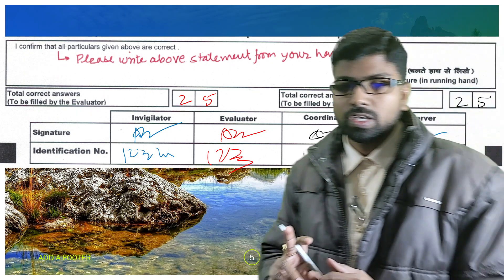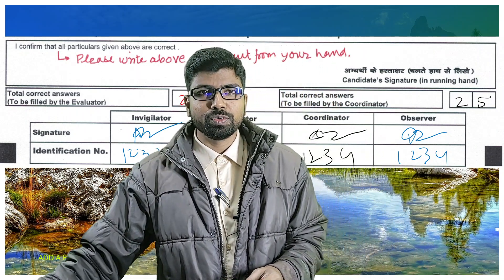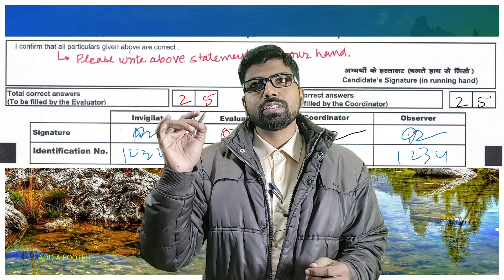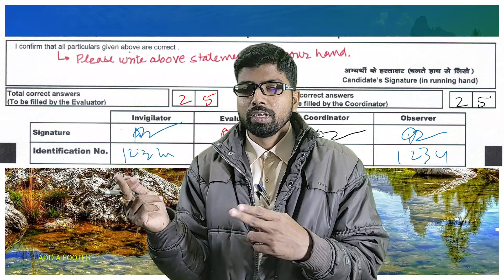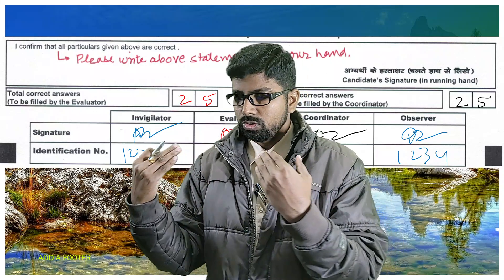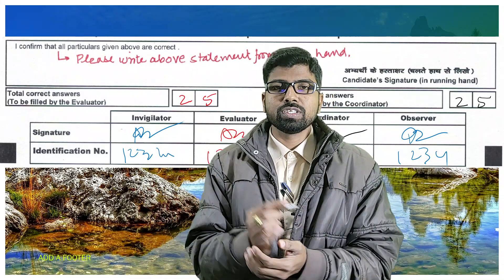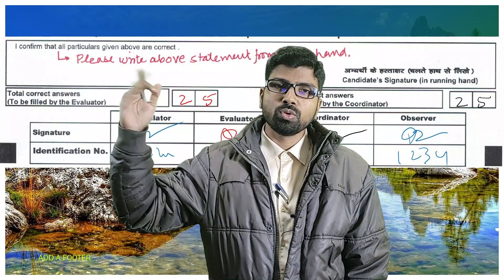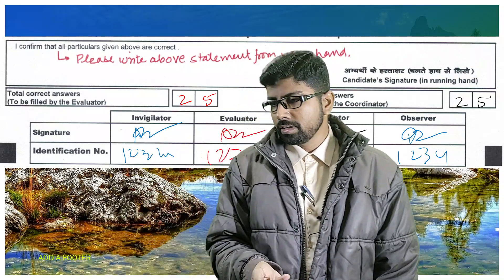I hope the ink color system is clear. Also, if students have darkened the OMR bubble but left the handwritten answer box empty, that will not be evaluated — and do not write anything there yourself, as it is the student's responsibility. During evaluation, only the evaluator with the red pen should be present; invigilators finish and leave. The evaluator, coordinator, and observer remain till the end of the entire process.